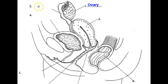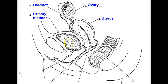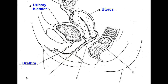Here we have the general anatomy of the female. Number one is the ovary. Number two is the oviduct — remember, that's also called the fallopian tube. Number three is the uterus. Number four is the urinary bladder. You can see that the uterus is on top of the urinary bladder. That's why pregnant women have to urinate frequently — the uterus expands and pushes on the urinary bladder. Number five is the urethra. Number six is the vagina. Number seven is the cervix, which is the opening to the uterus. And number eight is the rectum.